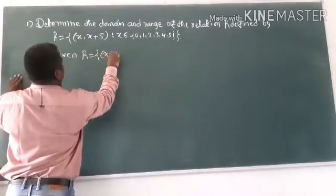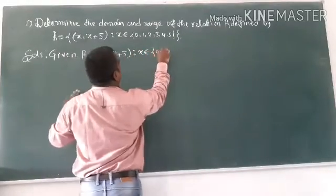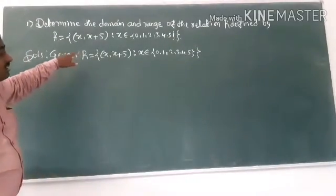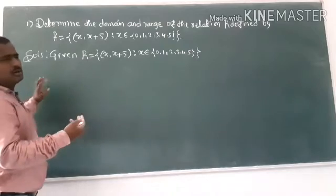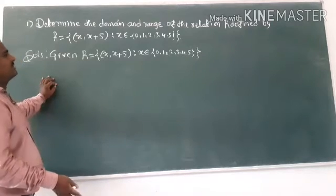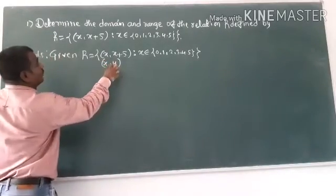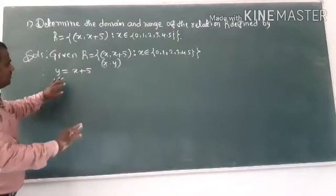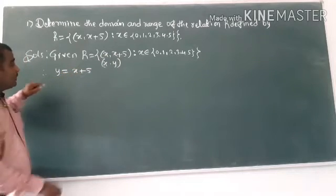The solution: given R equals the set of ordered pairs (x, x+5) such that x belongs to {0, 1, 2, 3, 4, 5}. This is in set builder form. They're not asking for roster form, just to define the domain and range. We'll use the equation where y equals x plus 5.